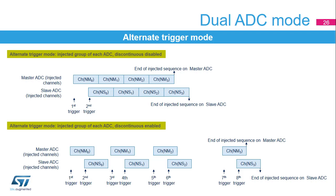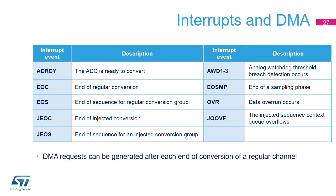When discontinuous mode is enabled and the first trigger occurs, the first injected channel of the master ADC is converted. When the second trigger occurs, the first injected channel of the slave ADC is converted. Each ADC can generate nine different interrupts: ADC ready, end of conversion, end of sequence, end of injected conversion, end of injected sequence, analog watchdog, end of sampling, data overrun, and the overflow of the injected sequence context queue.